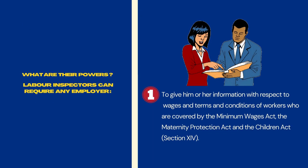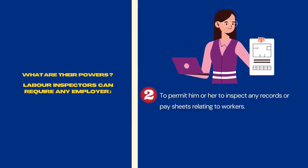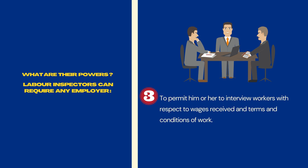So what powers do the Labour Inspectors have? Labour Inspectors can require any employer to give him or her information with respect to wages and terms and conditions of workers who are covered by the Minimum Wages Act, the Maternity Protection Act and the Children Act Section 14, to permit him or her to inspect any records or pay sheets relating to workers, and to permit him or her to interview workers with respect to wages received and terms and conditions of work.